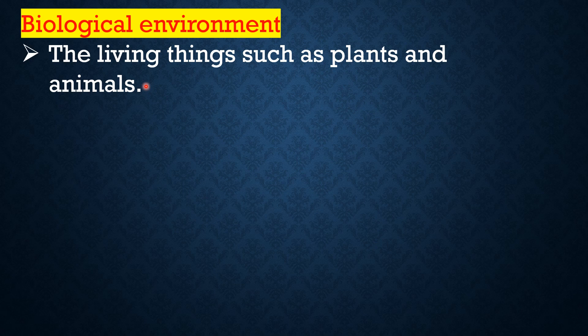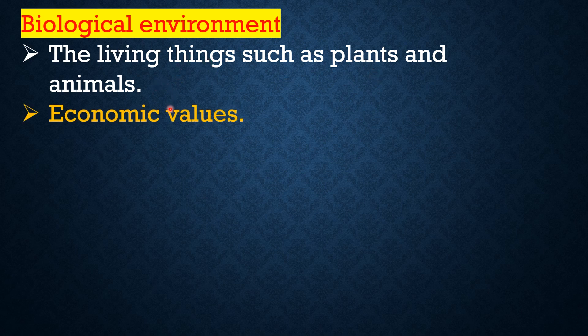Biological environment consists of living things such as plants and animals. Living things — plants and animals — make up the biological environment. This is also related to economic values.